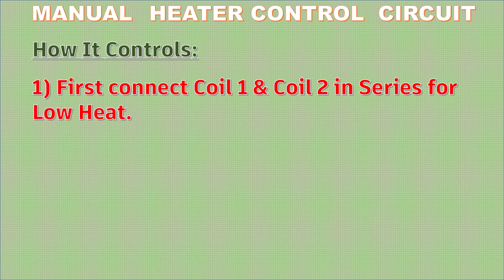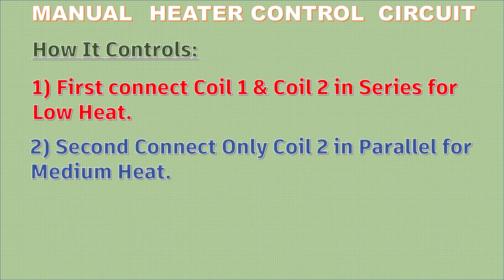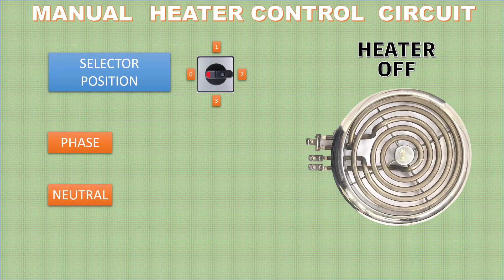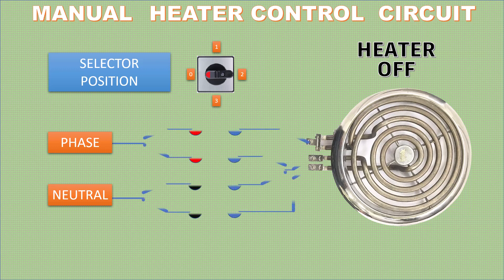First, connect coil 1 and coil 2 in series for low heat. Second, connect coil 2 in parallel for medium heat. Third, connect coil 1 and coil 2 in parallel for maximum heat. Let's move to the connection. At position 0, the heater is in off condition.